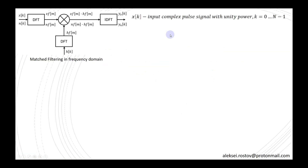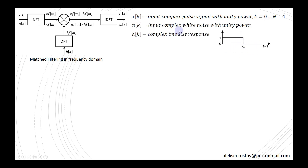For a matched filter in the frequency domain, I will consider an input complex pulse signal with unity power and a certain length, an input complex white noise with also unity power, and a complex impulse response. Unity power for both the input signal and additive white noise means that the signal-to-noise ratio on the matched filter input equals 1.